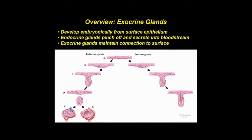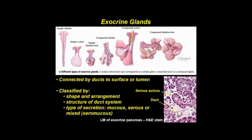All glands, classified as either exocrine or endocrine, develop from surface epithelium. Groups of surface cells differentiate, proliferate, and penetrate the underlying connective tissue, synthesizing and secreting extracellular products. Whereas endocrine glands pinch off and secrete into the bloodstream, exocrine glands maintain their connection to the surface epithelium via ducts, which take secretions to the surface or lumen. Exocrine glands may be classified by shape and arrangement of secretory units as tubular, acinar, or mixed tubuloacinar.